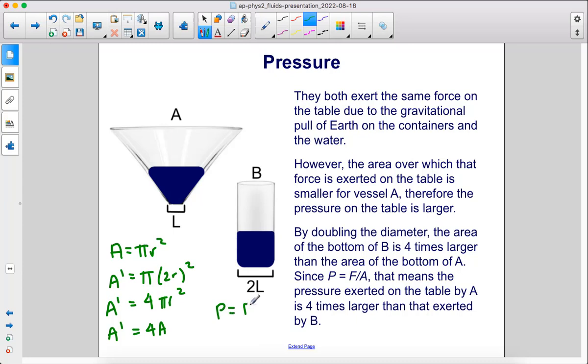Since pressure equals force divided by area, if we quadruple the area, we lower the pressure by 1 fourth, the original value. You can also think of that as the pressure exerted on the table by A is 4 times larger than B.